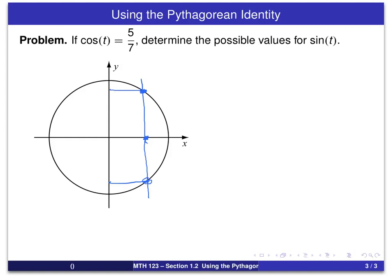So, using our identity, our Pythagorean identity, which I've written here, we just substitute for cosine of t.